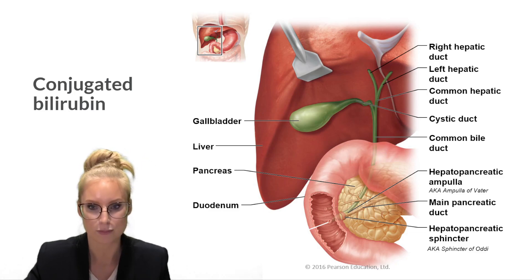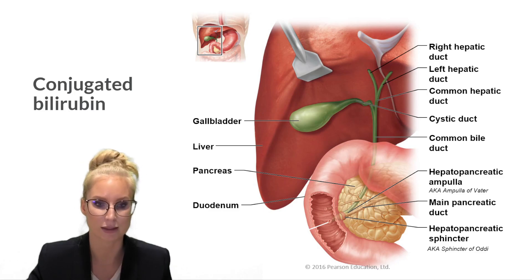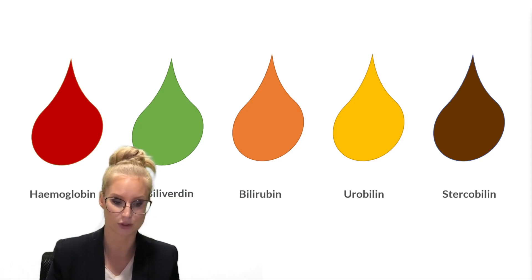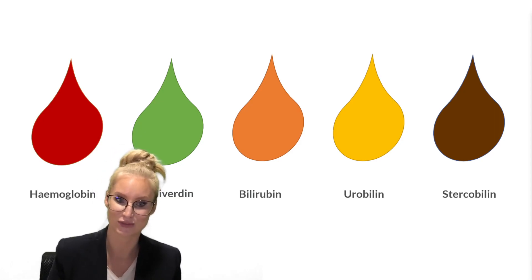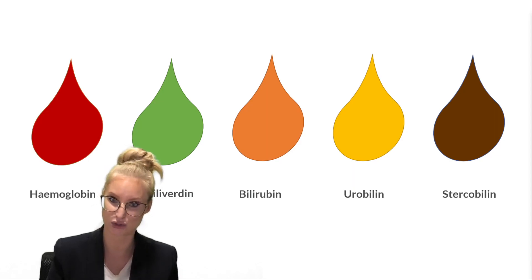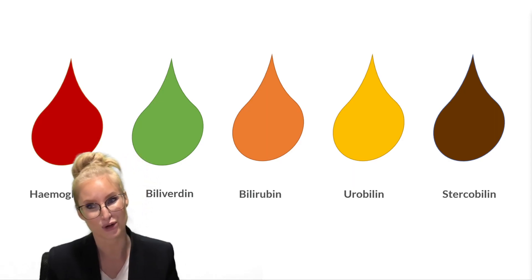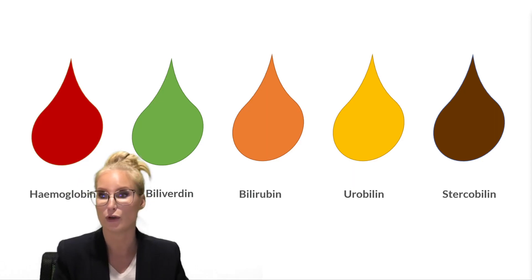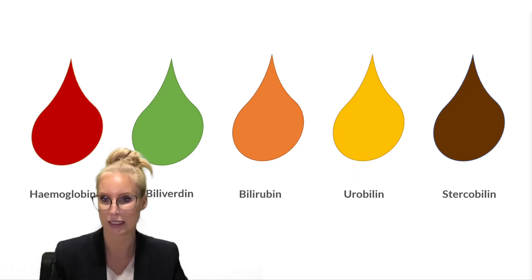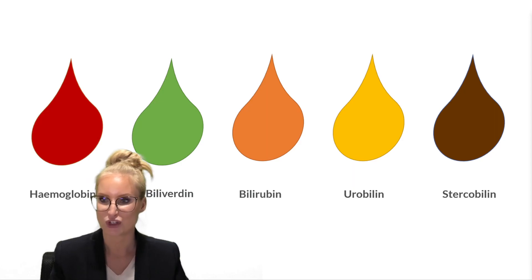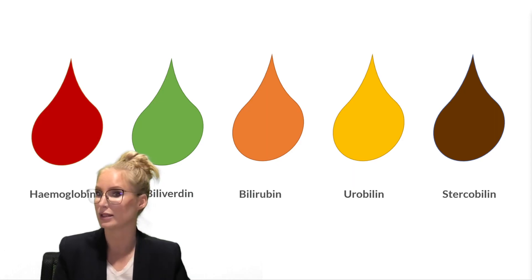Here's a fun fact: haemoglobin is in our red blood cells carrying oxygen. When carrying oxygen it's bright red; when deoxygenated it's dark red. When red blood cells get broken down, haemoglobin is converted first into biliverdin, which is a beautiful green colour, and then degraded into bilirubin, which is a browny, orangey, amber colour. You'll have both of those in bile, which is why bile is a greeny-brown colour.